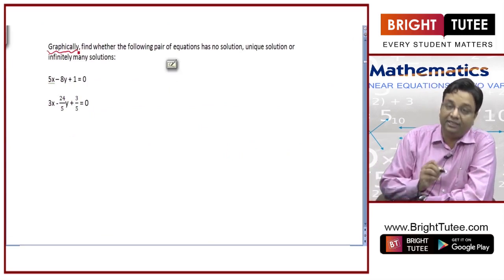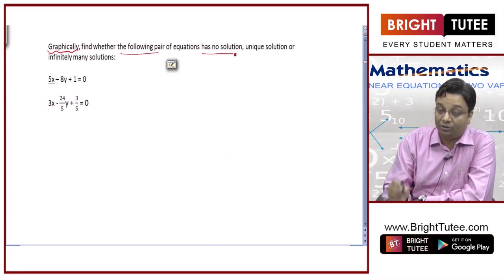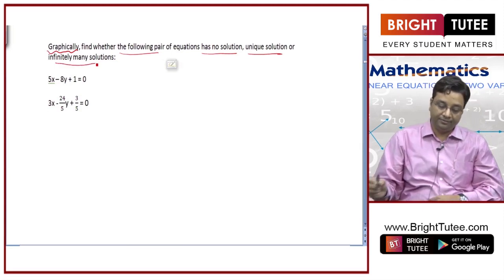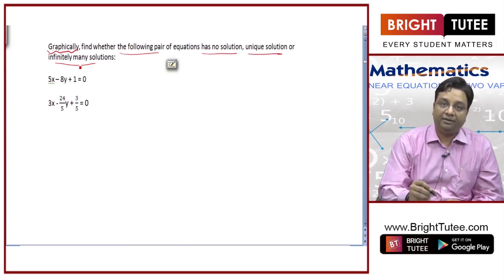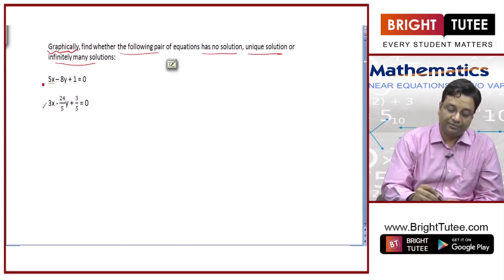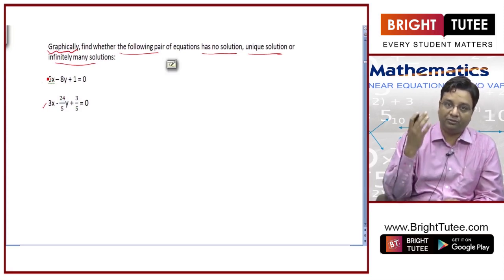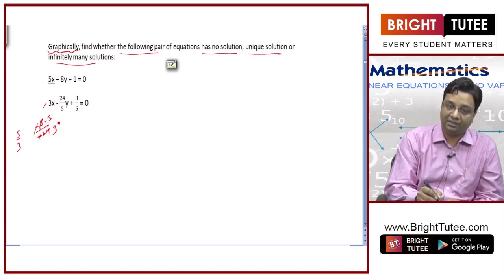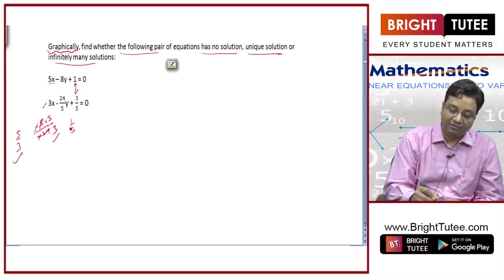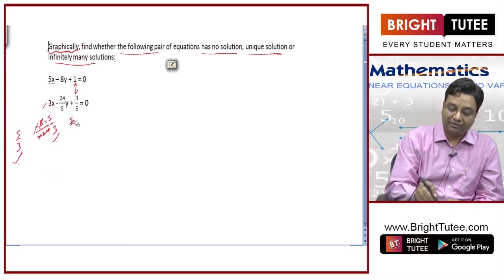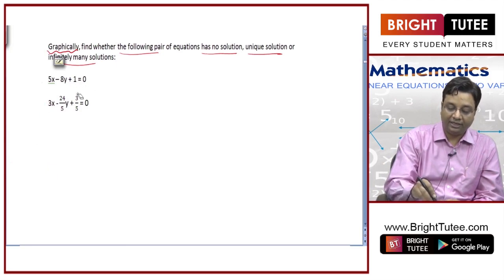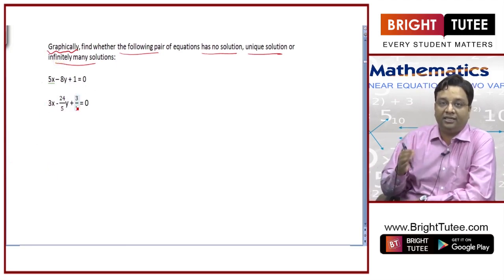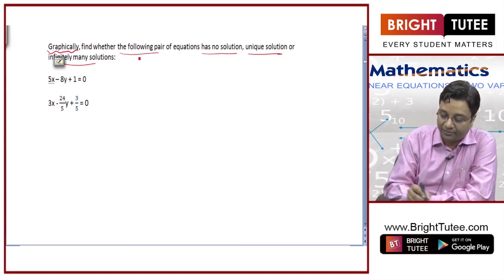Now again graphically we need to find whether the following pair of equations has no solution, unique solution, or infinitely many solutions. Before that, observe the ratios: we have 5 by 3 here, and minus 8 by minus 24 by 5 simplifies — the minus signs cancel and 5 cancels — giving again 5 by 3. And 1 by 3 by 5 is also 5 by 3. Since all ratios are equal, this will definitely give infinitely many solutions. You just need to show it graphically.